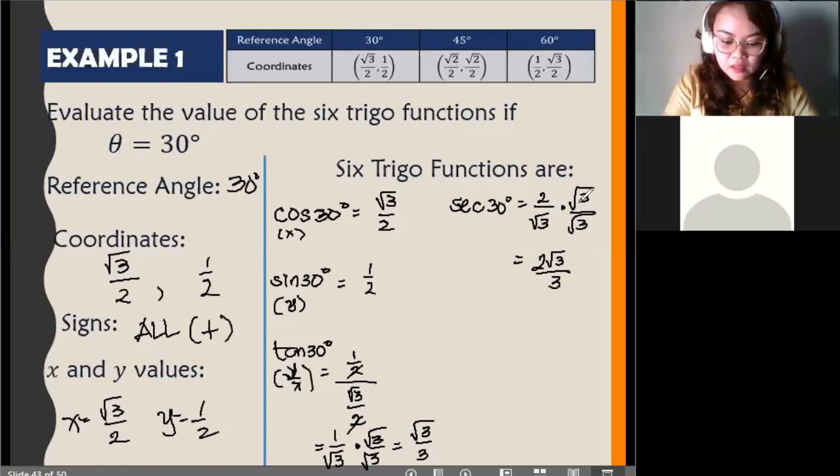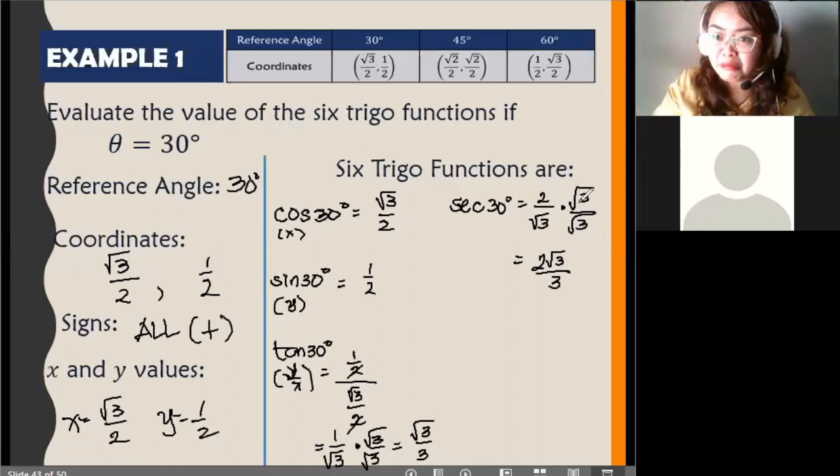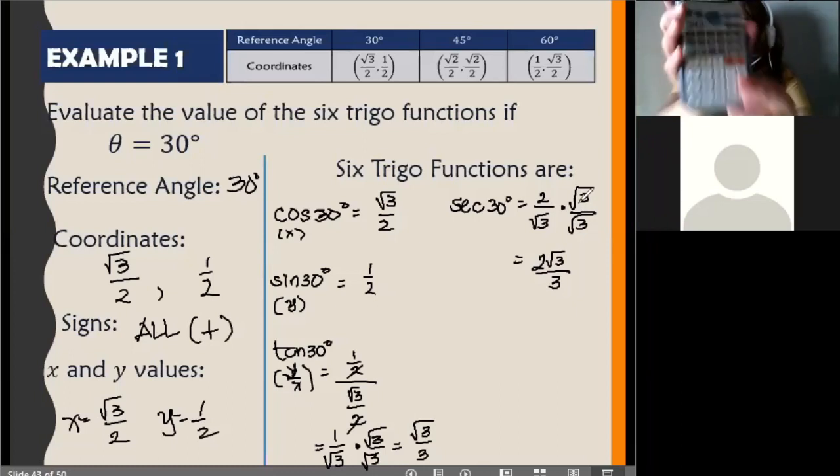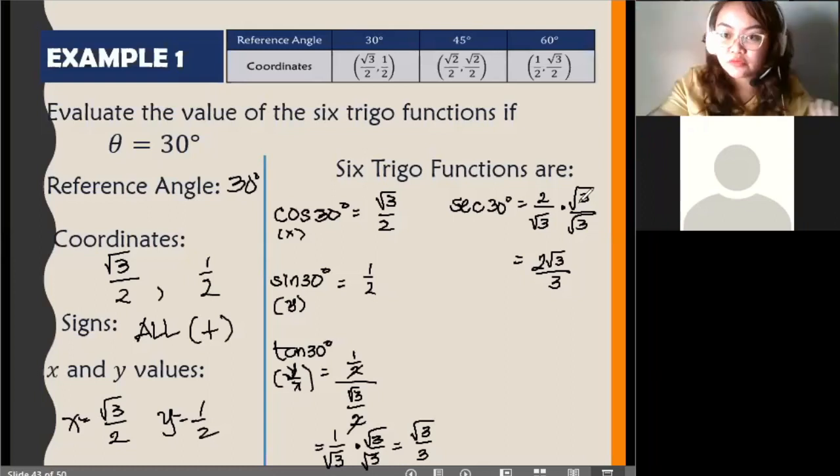Okay? Look, kung hindi ko nilagyan ng close parenthesis. So then, syntax error. Perfect. Diba? Kaya, maglagay kayo ng close parenthesis sa denominator nyo. And you'll get 2 square root of 3 over 3.